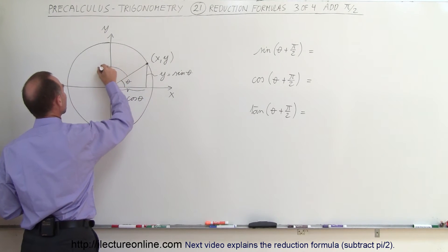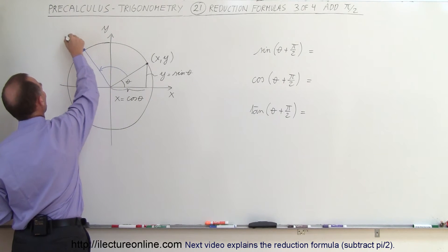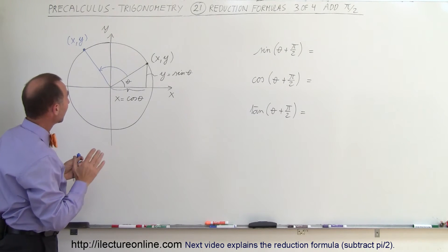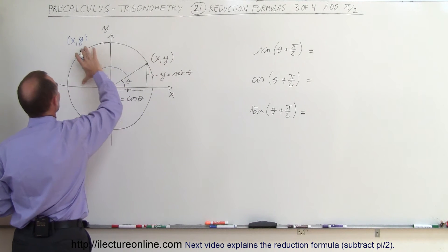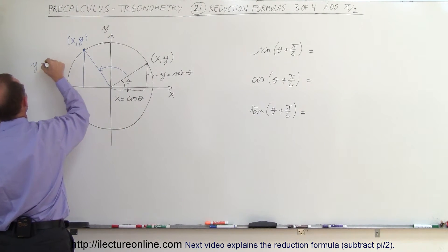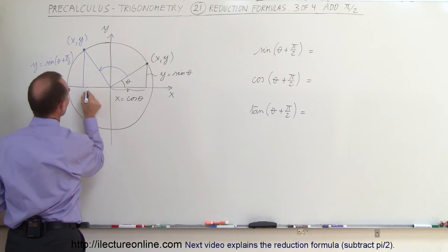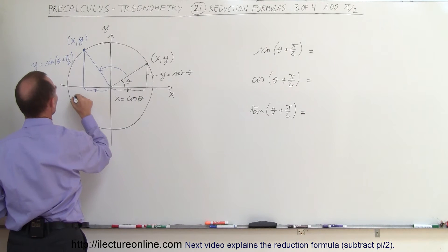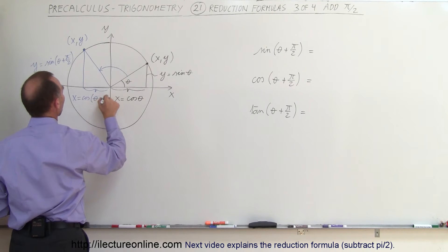So let's add 90 degrees. That puts us right over here, and here we have a new xy value on the unit circle. The y value has changed — it went from this to something much bigger. So this becomes the new y value, which is equal to the sine of theta plus pi over 2 or 90 degrees. And this value here is now a shorter value for x, equal to the cosine of theta plus pi over 2.